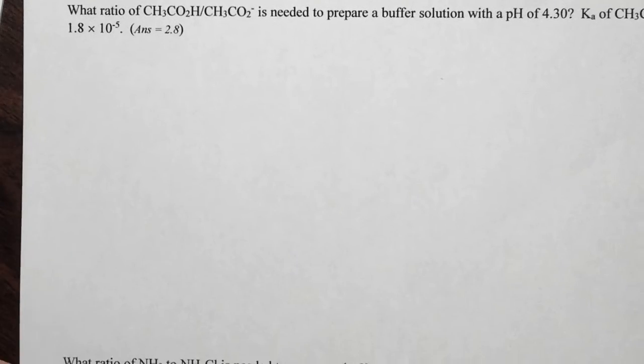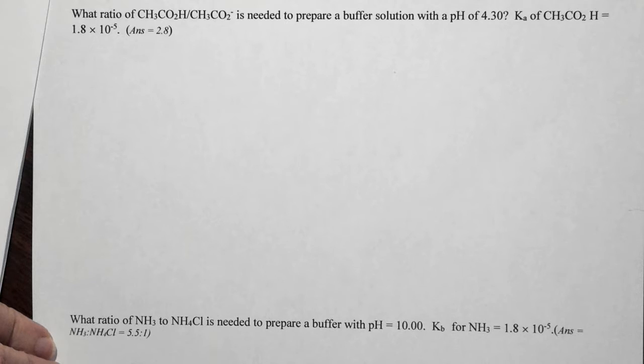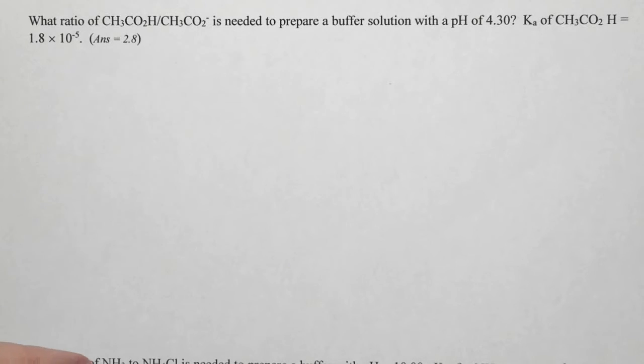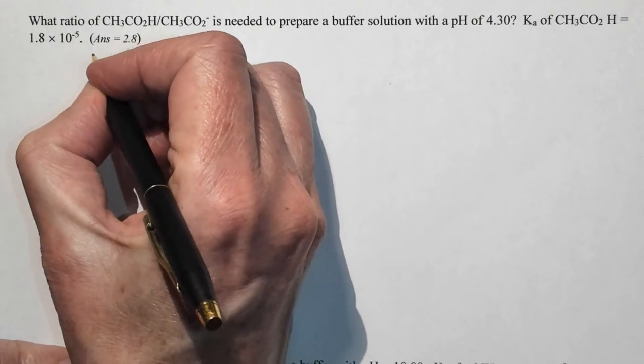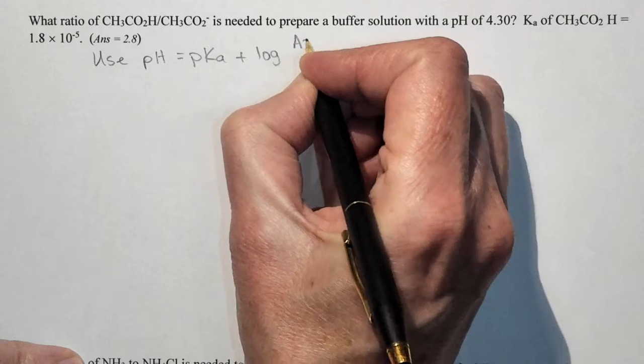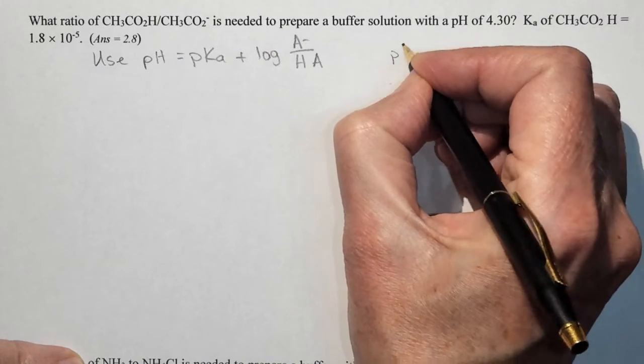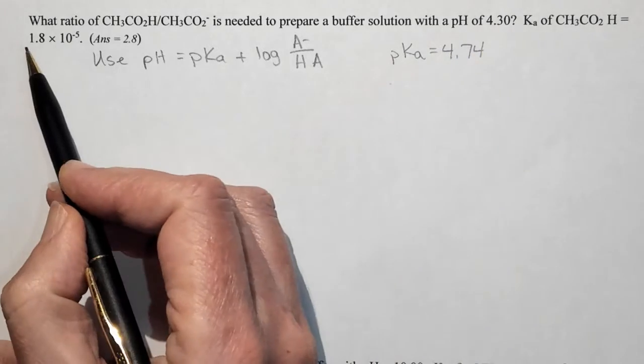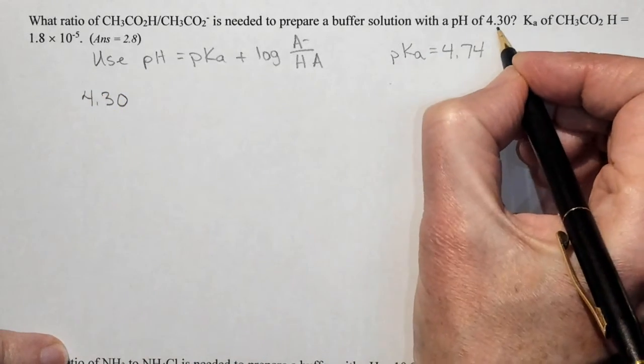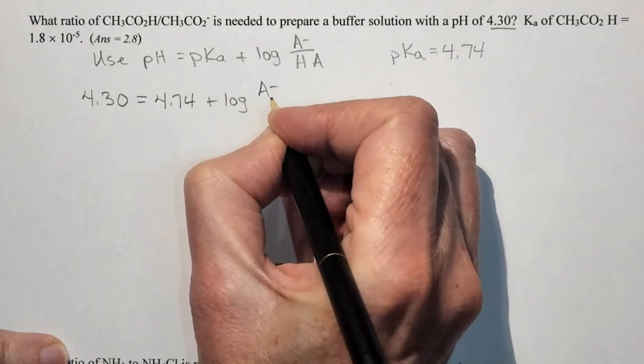Okay, so now we're looking at what ratio of CH3CO2 minus to CH3CO2H would we need to prepare a buffer solution with a pH of 4.30. Let me see if I can get that on screen a little better for you. There we go. So we're going to use pH equals pKa plus log of A minus over HA. And if we take the negative log of this value, then we have that pKa is equal to 4.74. I just took the log of the 1.8 times 10 to the negative fifth. So we have that 4.30, that was our target pH, is going to be equal to 4.74 plus log of A minus over HA.